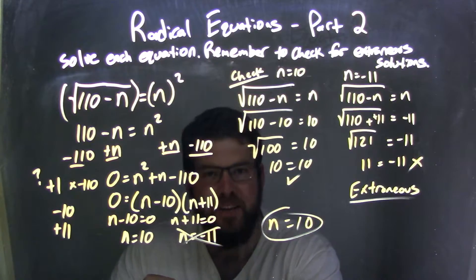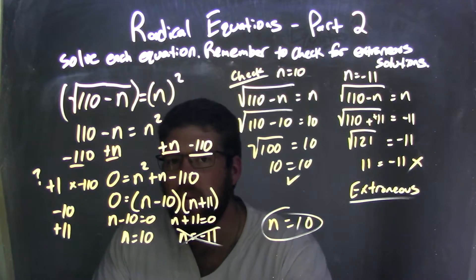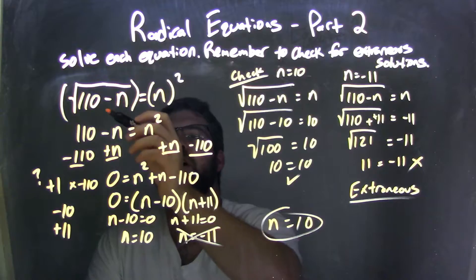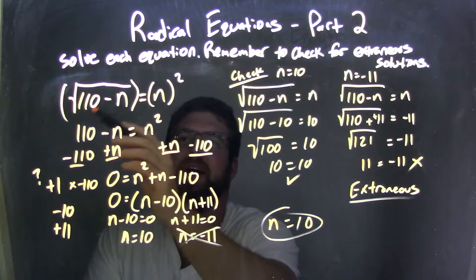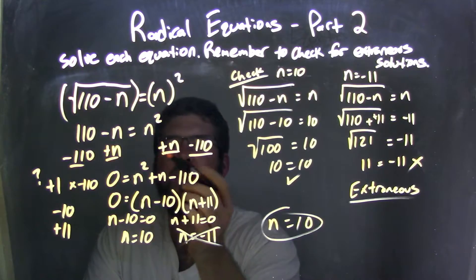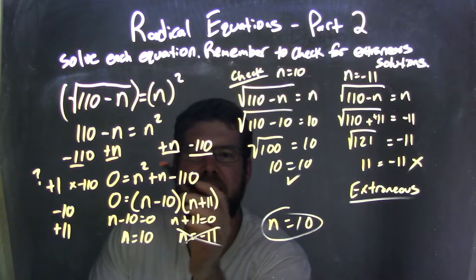Quick recap right here, we solved this radical by squaring both sides, then brought everything over to one side of the equation to get a quadratic.